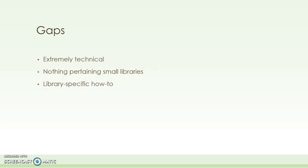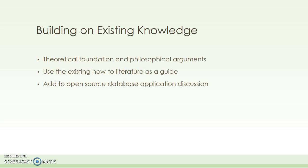All of the literature I found on implementing linked data was highly technical and not suited to library professionals with limited computer or data science training. The projects described and analyzed in the literature tended to be about large data sets — nothing about small data sets or small libraries. And there was nothing that I could find in the literature that was library-specific, describing a recipe or how-to in order to get started with a linked data project. I plan on using the how-to literature that I did find as a guide to launching my own project, and I will also be able to build on the literature about open source applications in this particular environment.